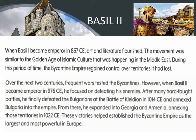When Basil I became emperor in 867 CE, he gave great promotion and flourishment to art and literature. The Byzantine Empire regained control over territories it had previously lost. Over the next two centuries there were frequent wars — a testing time for the Byzantines. When Basil II became emperor in 976 CE, he focused on defeating his enemies. After many hard-fought battles, he finally defeated the Bulgarians at the Battle of Kleidion in 1014 CE and annexed Bulgaria into the Byzantine Empire.